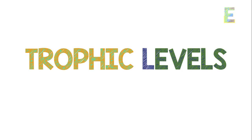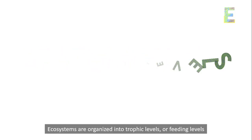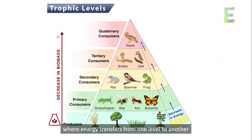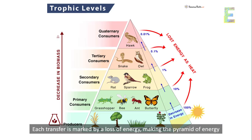Trophic levels: ecosystems are organized into trophic levels, or feeding levels, where energy transfers from one level to another. Each transfer is marked by a loss of energy, making the pyramid of energy.